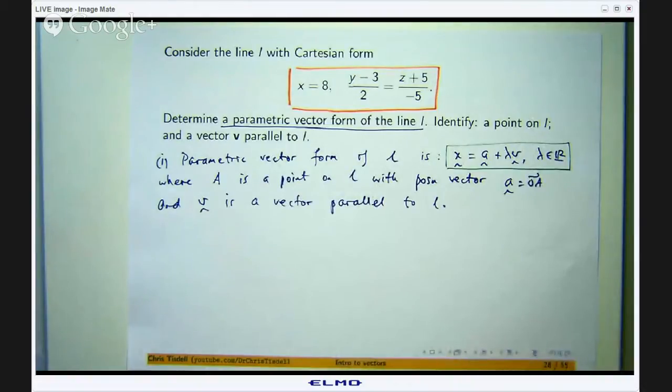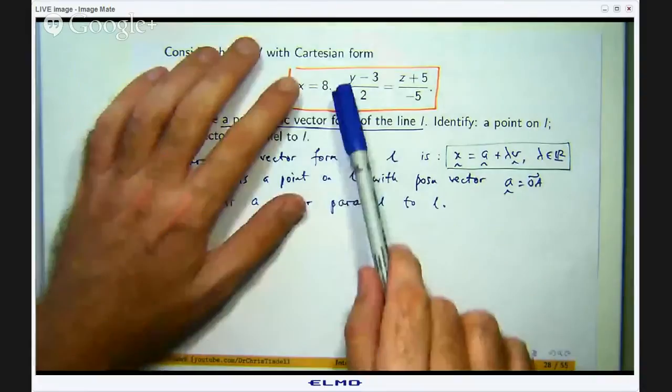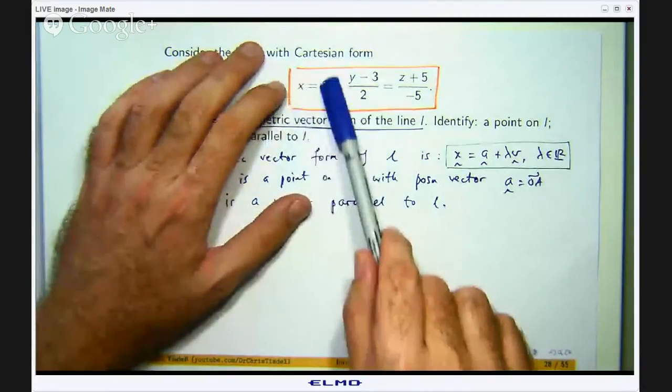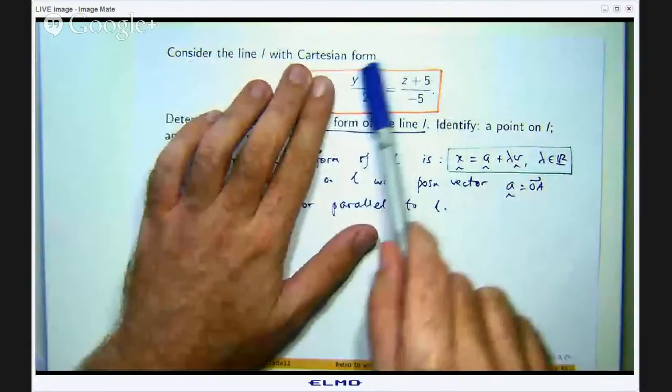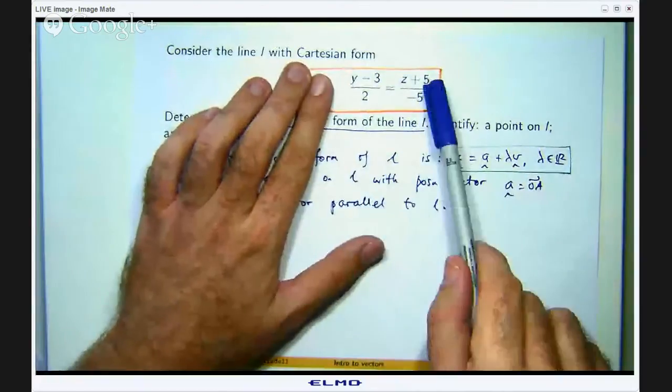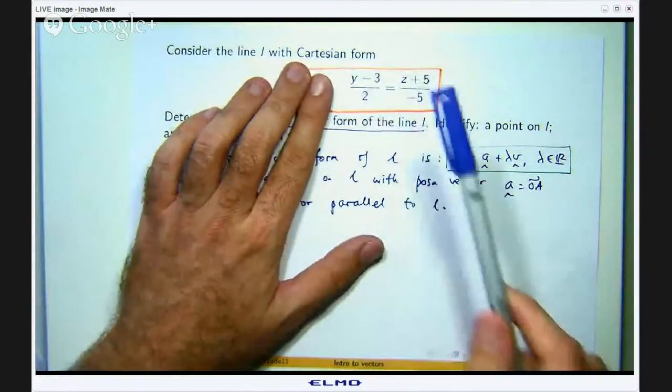A is a point on L with position vector A equals OA and V is a vector that is parallel to L. So how do we come up with this form from this? Well, what a lot of people do is just write down the answer, right? They know that this is a line that passes through the point and is parallel to the vector. But let us say you forget that. I am going to show you how you can transform it. So this kind of is isolated on its own. Let us work with what we have here. I am going to introduce a parameter lambda to be either of these values.